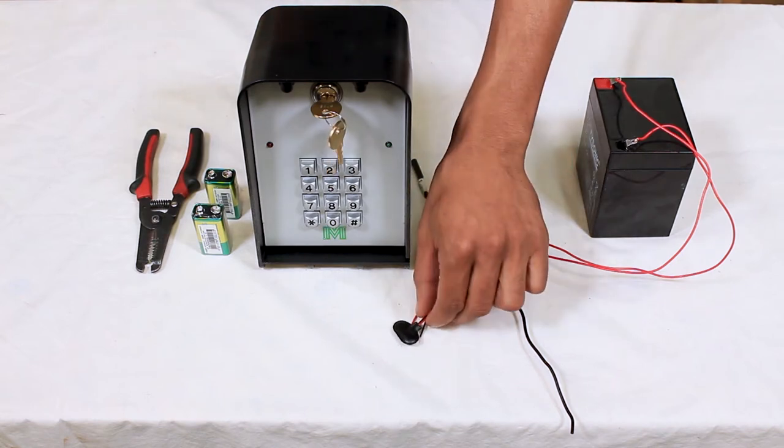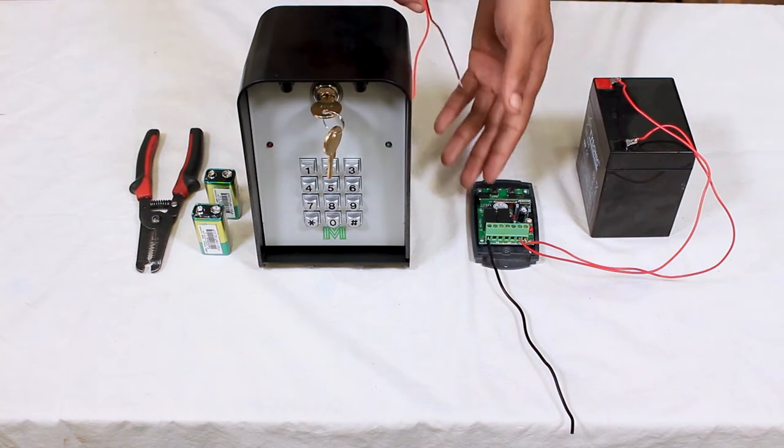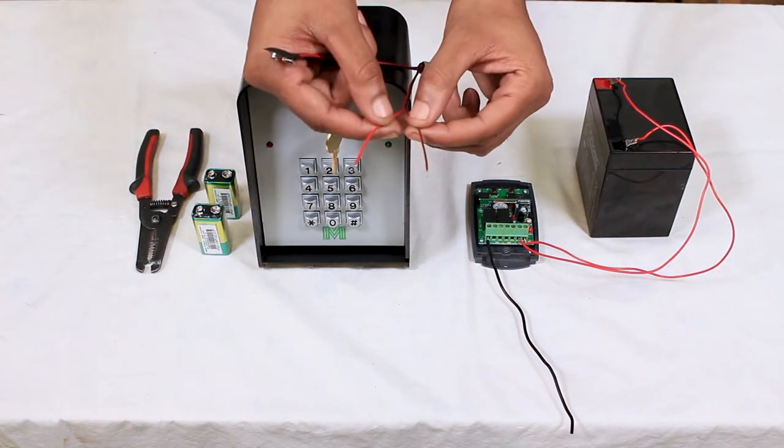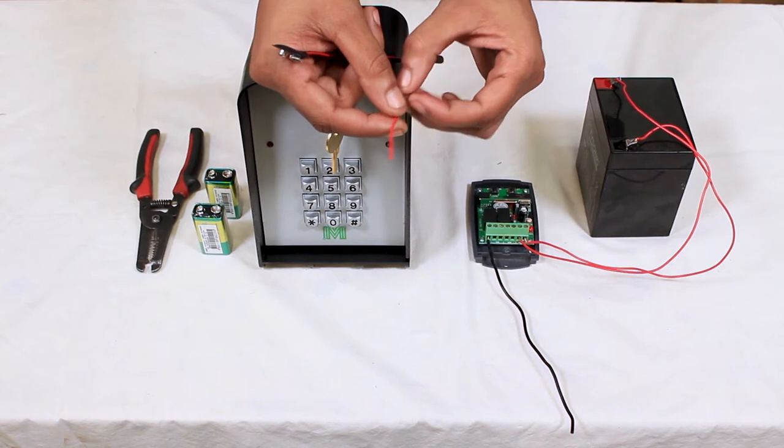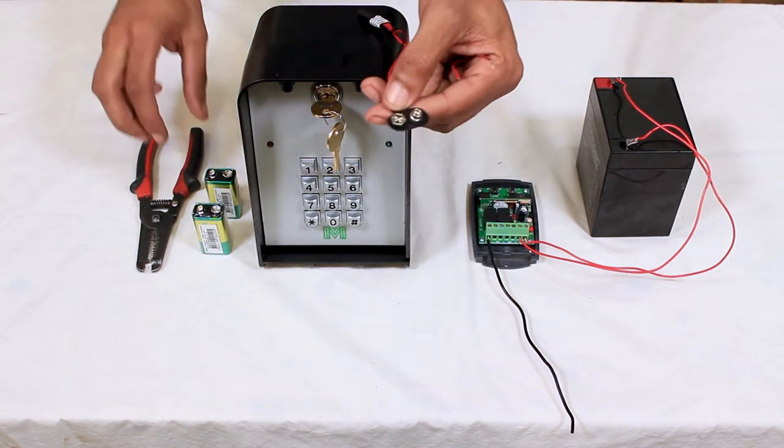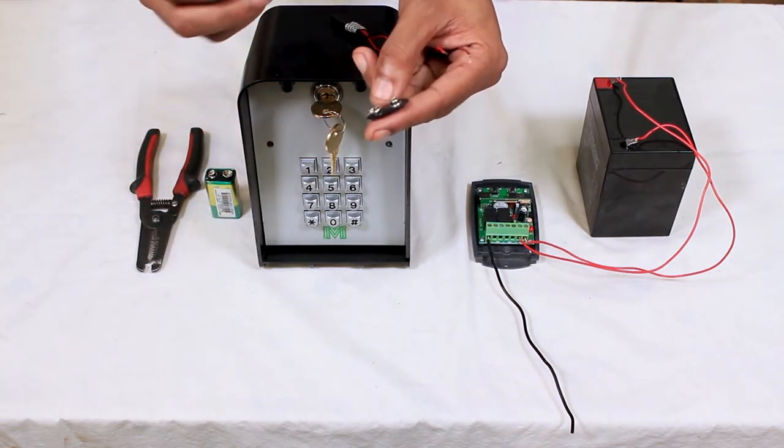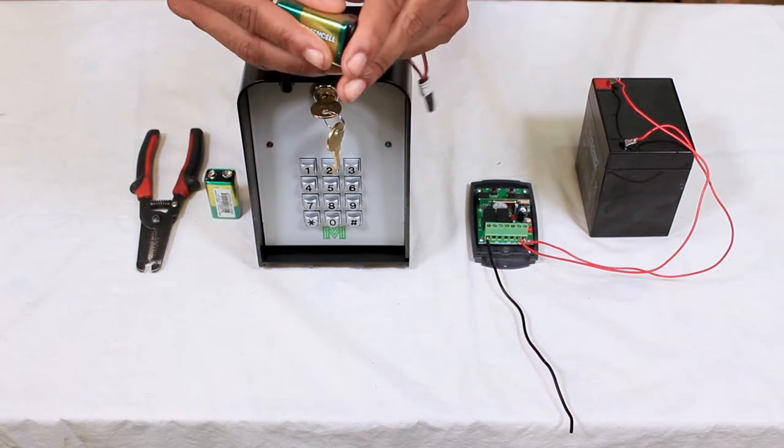First thing we're going to do now is grab the module and pair it to the receiver. So what you want to do is strip the two ends like how I have them here, and then take a 9-volt battery and connect it to the module so that way we can transmit that signal.